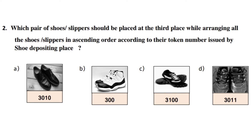Our next question is: which pair of shoes should be placed at the third place while arranging all the shoes in ascending order according to their token number, as issued by the shoe depositing place? For finding the third placed pair of shoes, let's arrange the token numbers in ascending order.